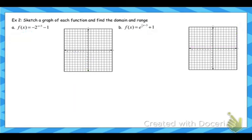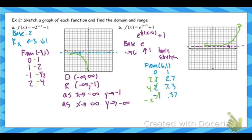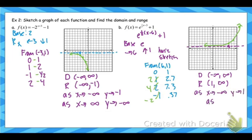Let me go back and do domain and range. Domain is negative infinity to infinity. Range: the lowest y value is 1, keeps going to infinity. End behavior: as my x's get smaller, they're approaching that horizontal asymptote, which has a value of 1. As your x's get bigger, your y's are getting bigger.